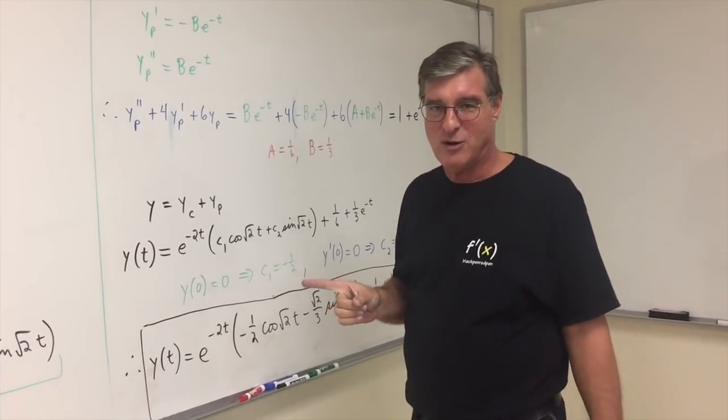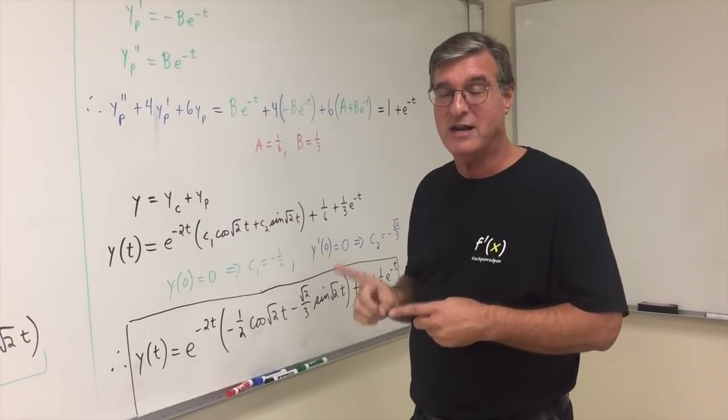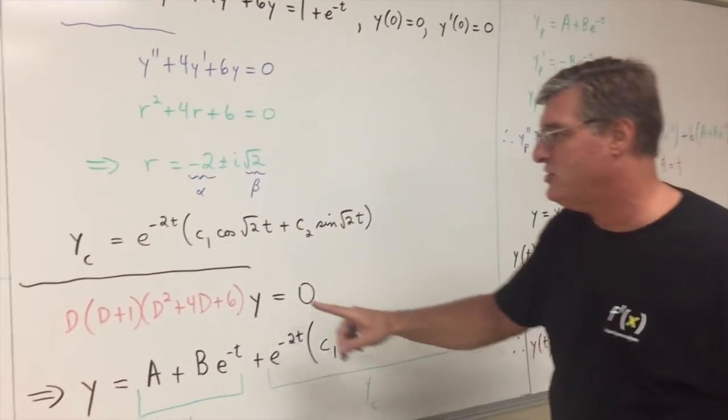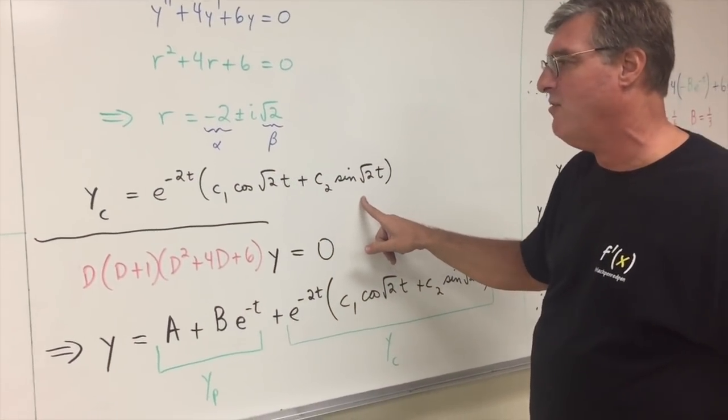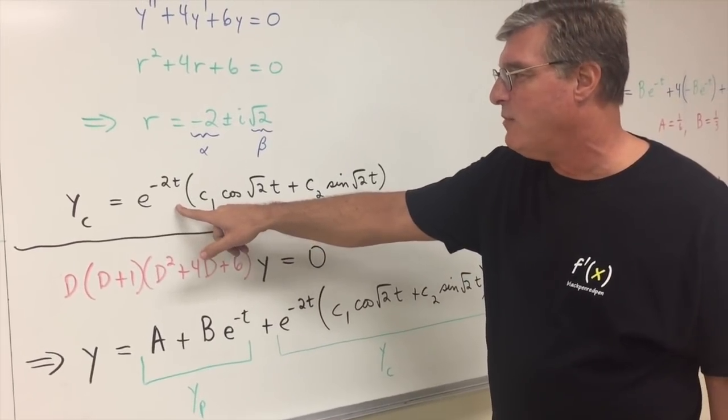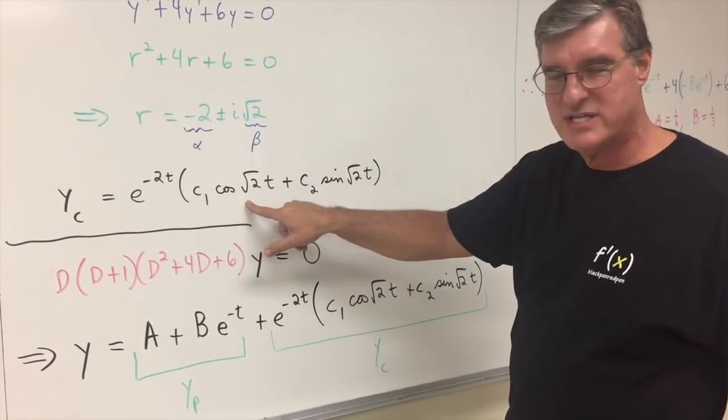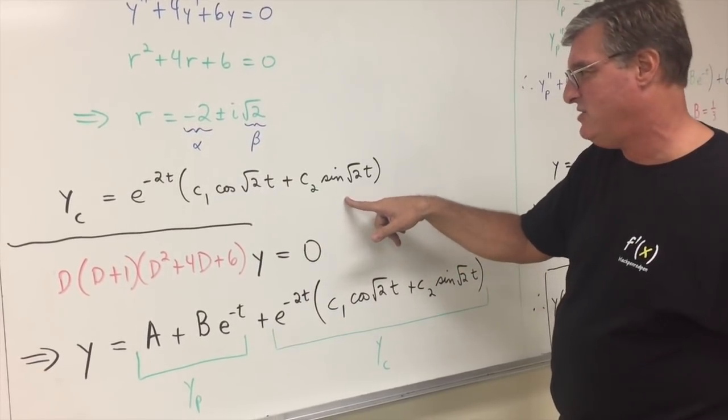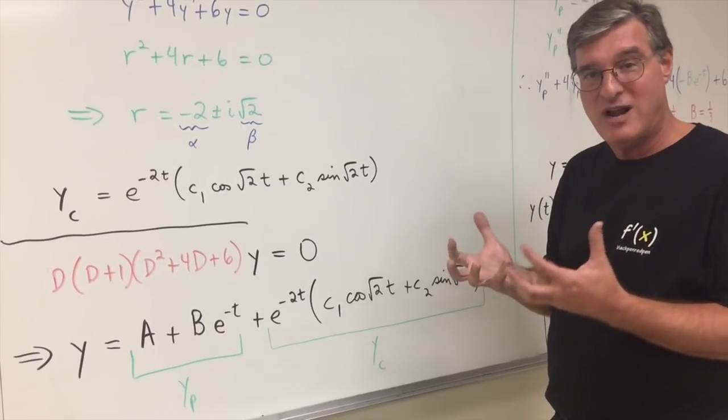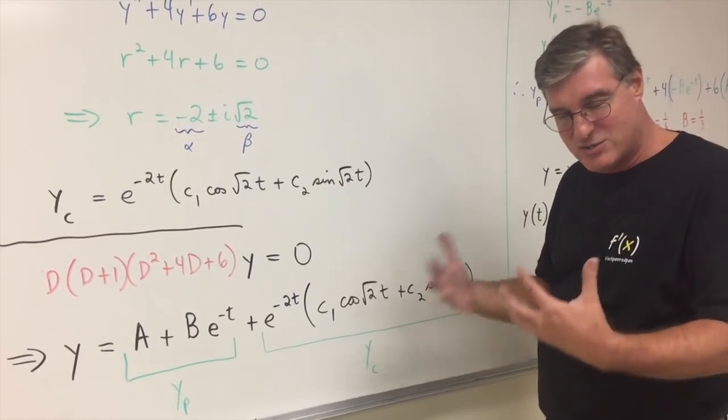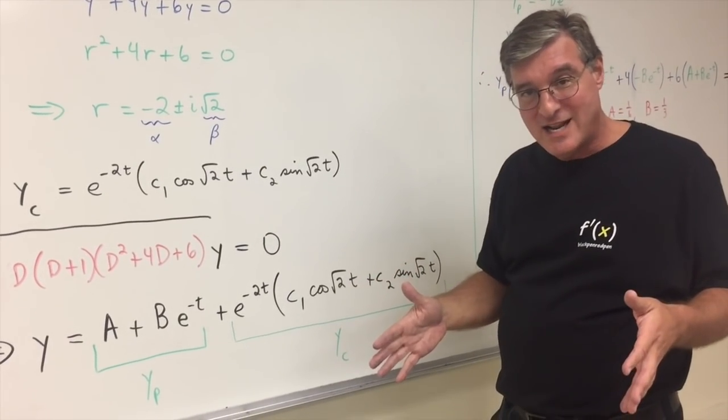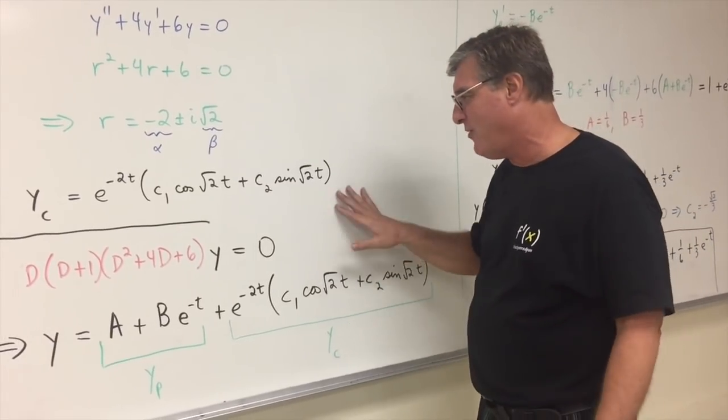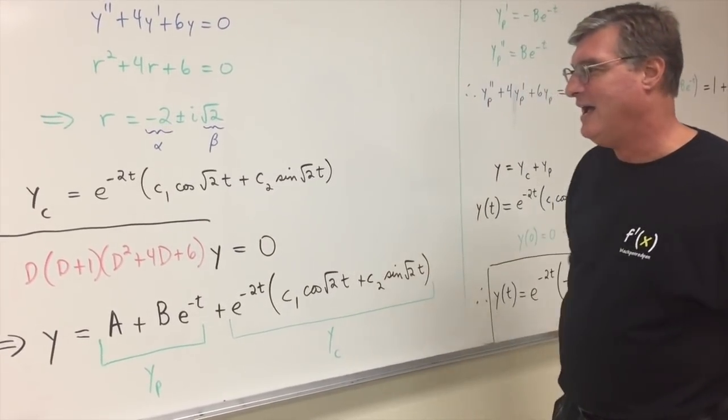So you would use variation of parameters on functions like that. However, on this particular problem, you could do variation of parameters on it, but I would argue against it and I'll tell you why. Take a look at what your two linearly independent solutions are going to be here. Like y1 is going to be e to the minus 2t cosine square root 2t. Y2 is going to be e to the minus 2t sine root 2t. Think about what you have to do with those. You have to take their derivatives. So you've got to use product rules. Put them in a Wronskian, do the Wronskian, and then you have to, well, you can look up the variation of parameters method if you don't know what it is.